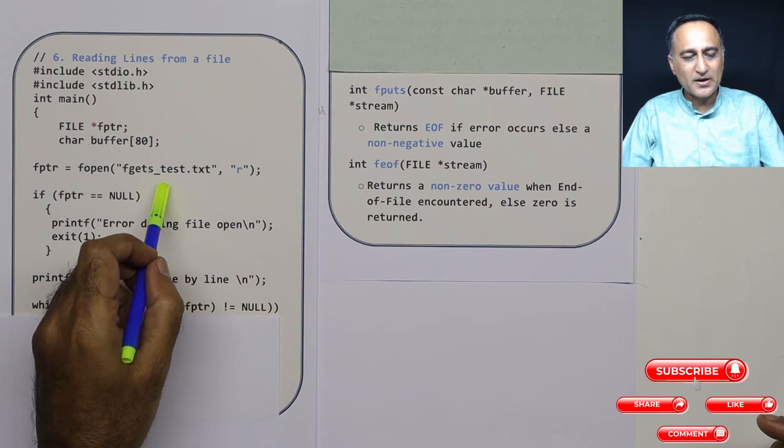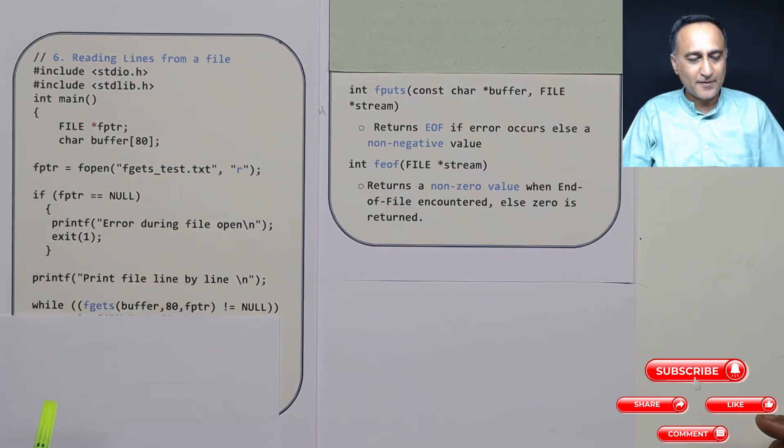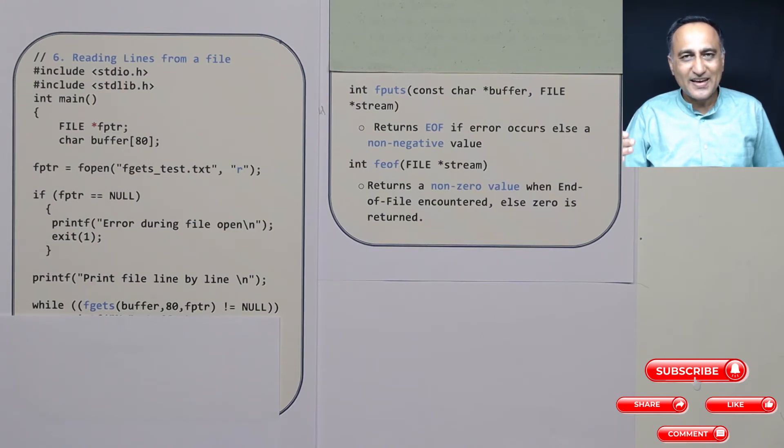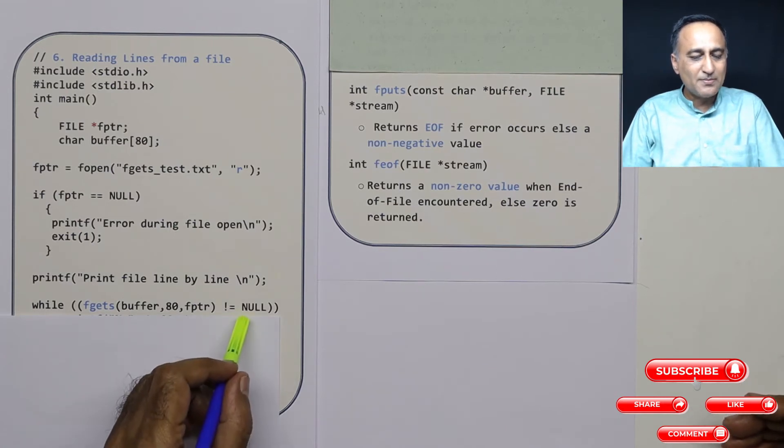fptr means read from this particular source of input or your file. Now fgets will keep reading line by line. The minute it encounters the end of the file or there is certain error while reading, this will become null.